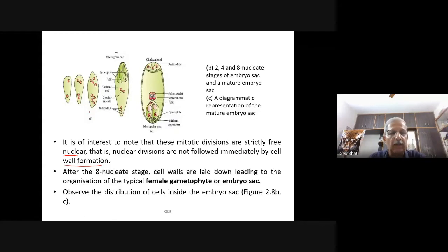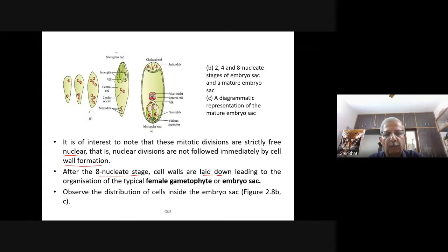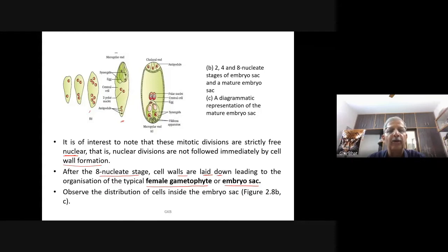Nuclear divisions are not followed by immediate cell wall formation. There is no cytoplasmic division and no cell wall formation. After the eight-nucleate stage, cell walls are laid down, leading to the organization of the typical female gametophyte or embryo sac.